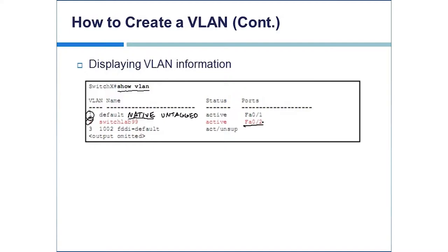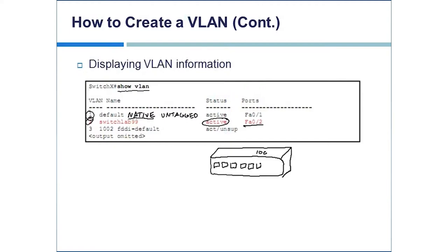When you see the show VLAN output, it will show which ports are assigned to each VLAN and indicate whether the VLAN is active. For a VLAN to be active, you have to have at least one port assigned to that VLAN with a status of up/up. If I made VLAN 100 but didn't assign any interfaces to it, that VLAN would be non-functioning. If I attach ports to VLAN 2 and at least one interface is up/up, that VLAN will be considered active. This will be important when we later talk about VLAN interfaces and inter-VLAN routing.